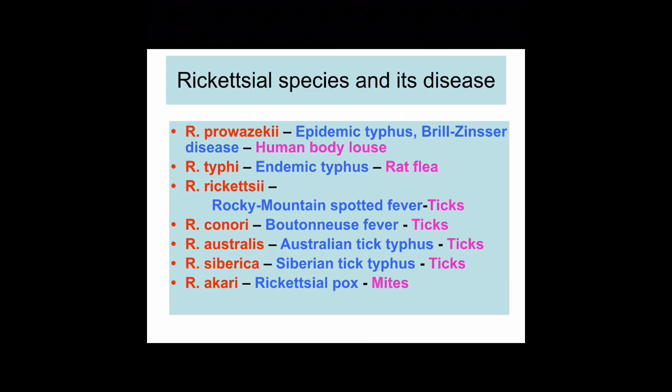Rickettsia prowazekii causes epidemic typhus and Brill-Zinsser disease via transmission by the human body louse. Rickettsia typhi causes endemic typhus via a bite from a rat flea. Rickettsia rickettsii causes Rocky Mountain spotted fever via transmission of ticks. Rickettsia conorii causes Boutonneuse fever. Rickettsia australis causes Australian tick typhus, Rickettsia sibirica causes Siberian tick typhus via tick bite, and Rickettsia akari causes rickettsialpox via a bite from mites.